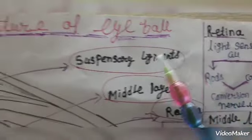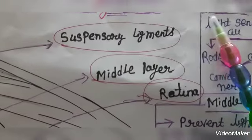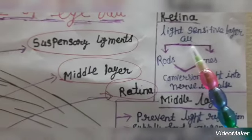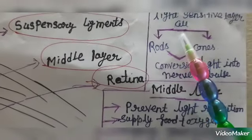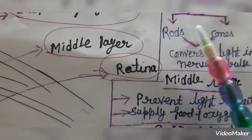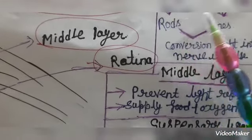Here are the functions. We've seen the parts, now we'll see their functions. Retina, retina's function is it's light sensitive. Retina is light sensitive, why? Because it has two cells, rods and cones. It is a question in competitive exams.